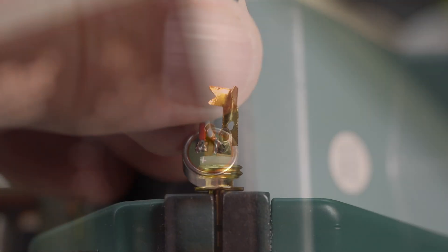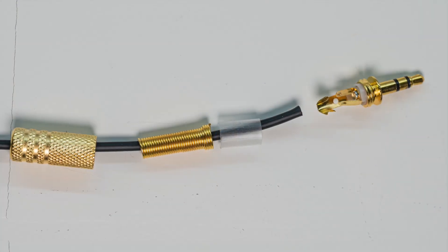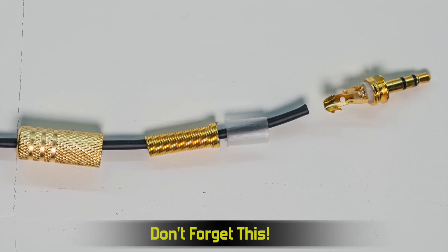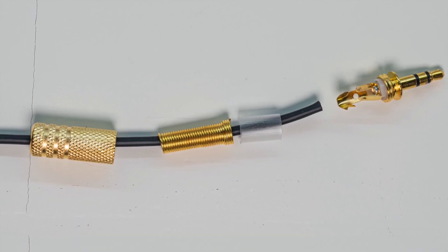Now for the connector end. Put the part of the jack with the solder connection points in the small vise. Now this is the important part. Slide the rest of the connector pieces over the wire so that they're already there when we solder the connector.